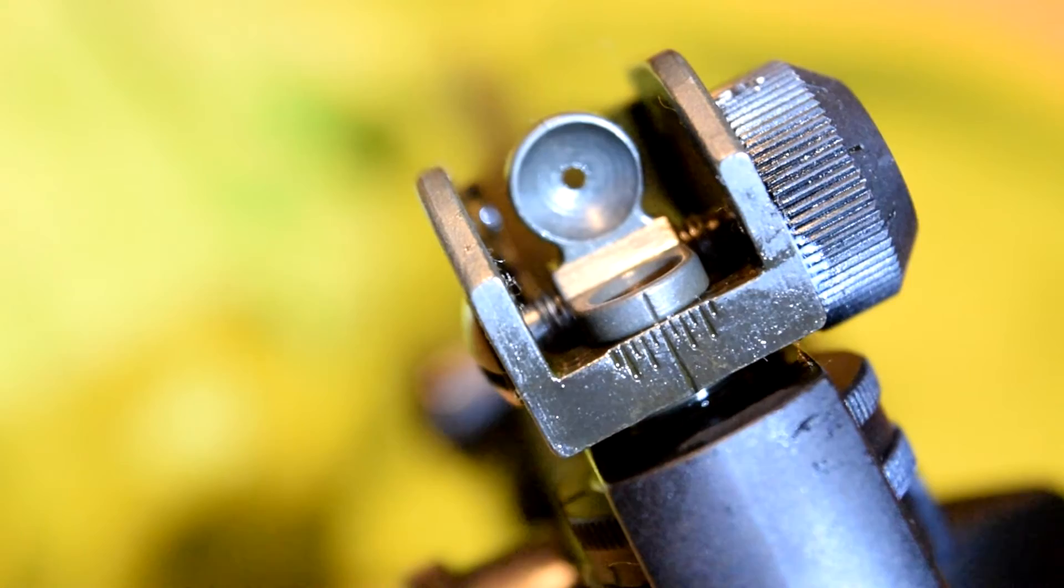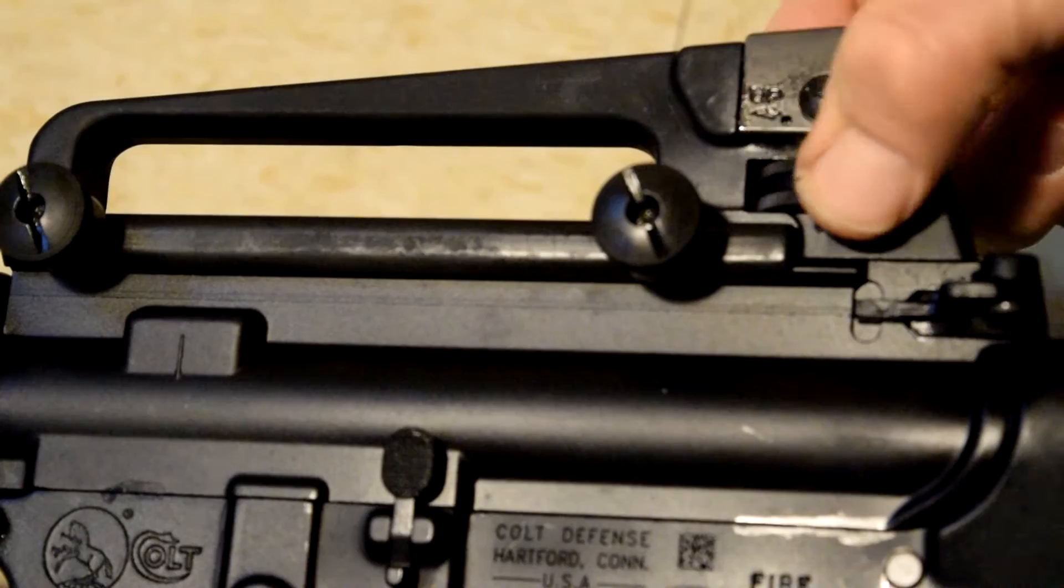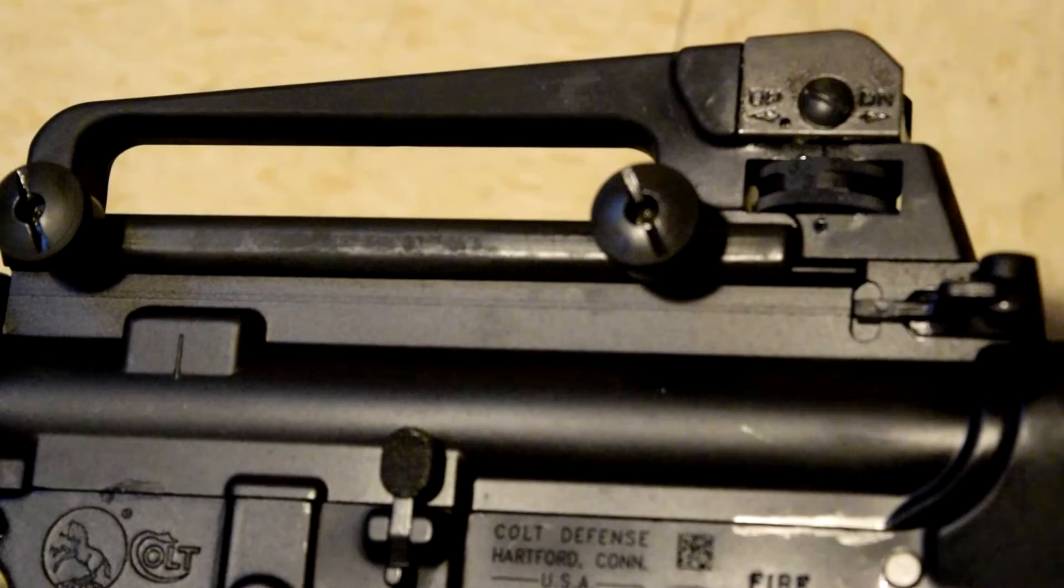Then you want to head to your mechanical zero for your elevation. It is done with the bottom knob. Just turn that counter clockwise as far as you can. Then turn it back maybe like half a click. And that is your mechanical zero for the elevation.